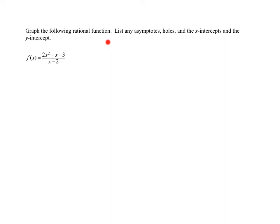In this problem, I need to graph the following rational function. Here it is. In order to make that easier, we need to find the asymptotes, holes, x and y intercepts. Once we have that information, the graphing part is fairly easy.